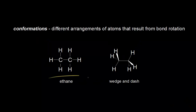On the left we have one way to represent the ethane molecule. The only problem with this drawing is it doesn't give us much information about what ethane looks like in three dimensions. On the right is another drawing of the ethane molecule, and this drawing gives us more information. This is a wedge and dash drawing. A wedge has a bond coming out at you in space, or a bond coming out of the plane of the page. A dash is a bond going away from you in space, or a bond going into the plane of the page. A straight line means a bond in the plane of the page.